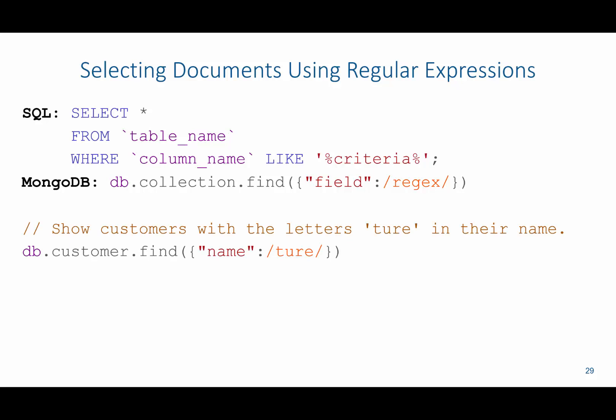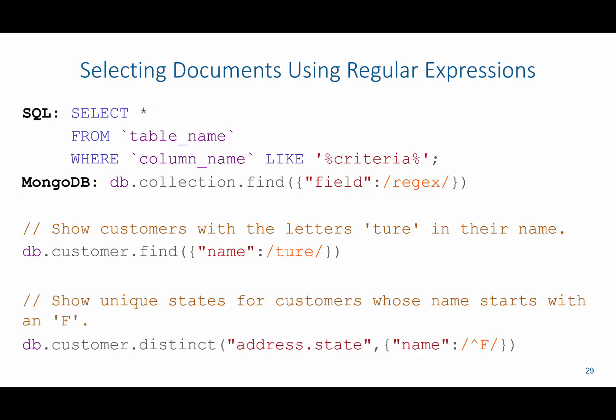If I wanted to show customers with the letters 'chur' in their name, I'd say db.customer.find and look for 'chur' inside their name — this would return customers such as those that have 'furniture' as part of their name. Then, to show unique states for customers whose name starts with F, we'd say db.customer.distinct, look for address.state, and use the name field with a caret symbol before F, since in regular expressions the caret indicates something starts with the next character.